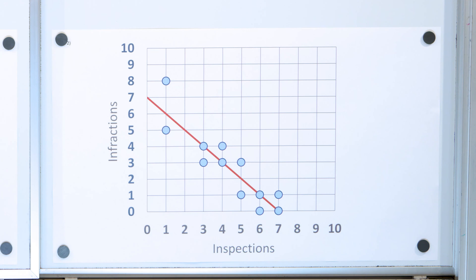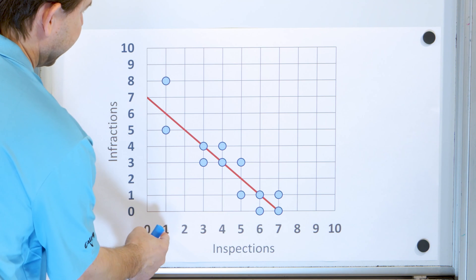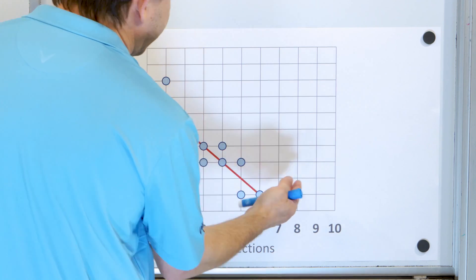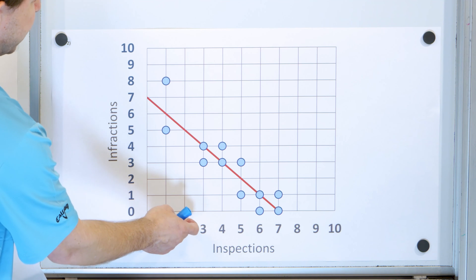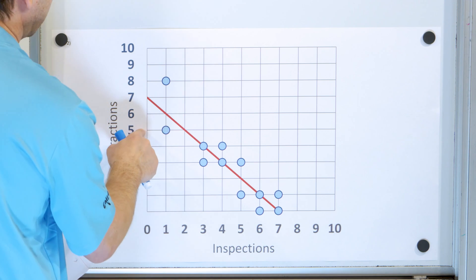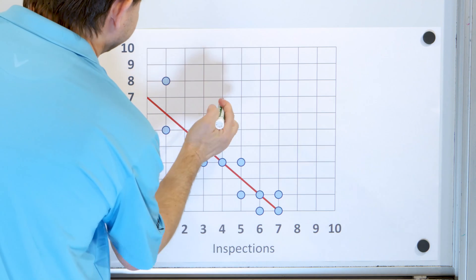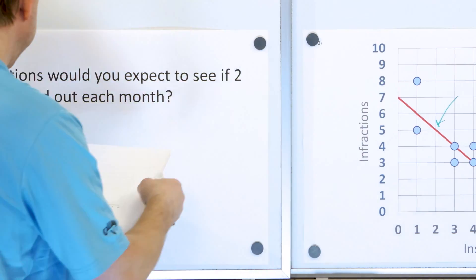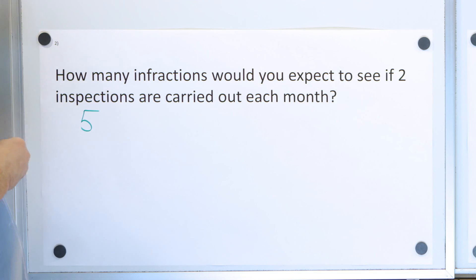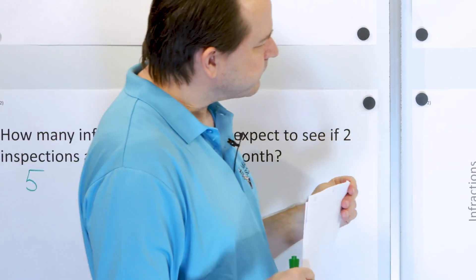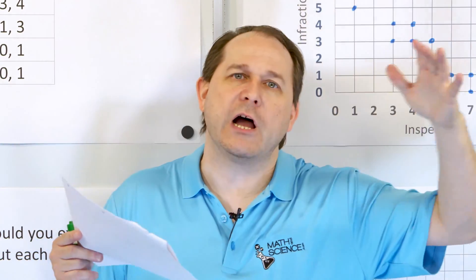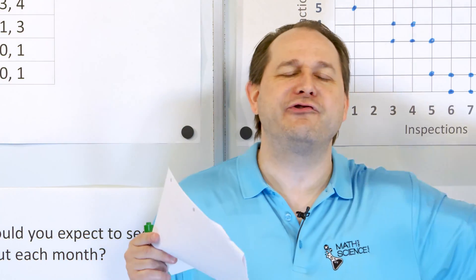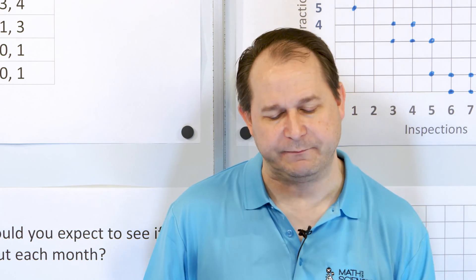How many infractions would you expect if two inspections are carried out each month? We have data for one, three, four, and other inspections, but not for two inspections. Looking at the line of best fit, it crosses right at that point — so we interpolate that about five infractions will happen if we inspect two per month. When we look beyond the data we have, we call it extrapolation; when we look in between data points, we call it interpolation.